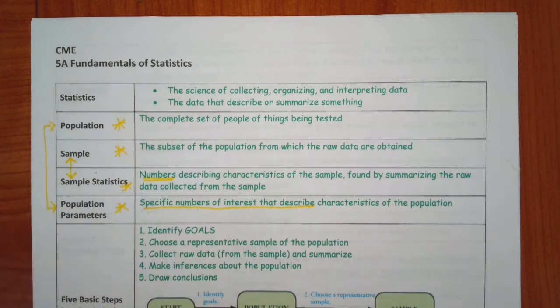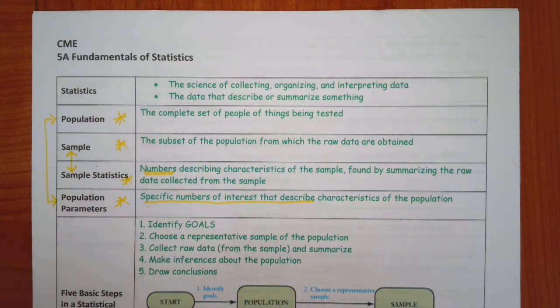So let's start out with 5A, which is the fundamentals of statistics. Lots and lots of definitions. And we'll just go through those all again. Once again, as always, you are not going to be given a vocabulary test, but all of these terms will be embedded. The first one, what is statistics? It's the science of collecting, organizing, and interpreting data. And it is the data then that describes something, whatever it is that you want to know about.